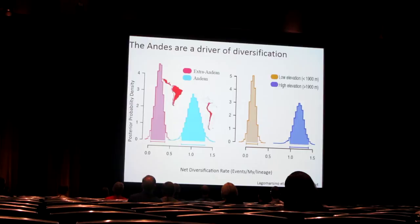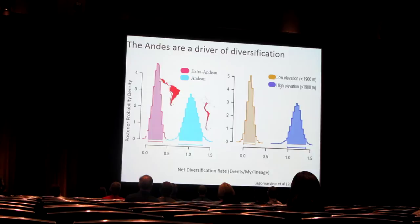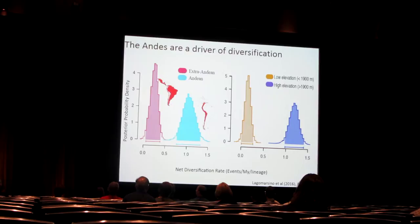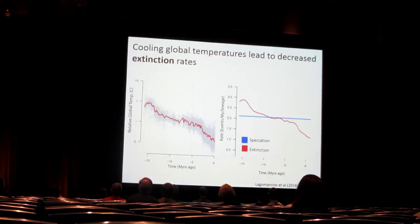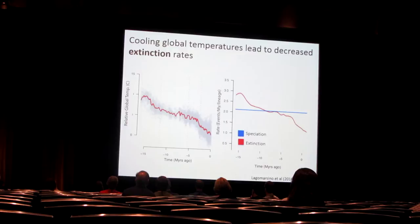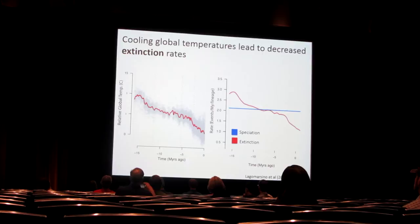We used other models as well. Using BiSSE, we see that Andean lineages in light blue have faster rates of net diversification than extra-Andean lineages, and similarly lineages at high elevation are evolving at a faster rate than those at low elevation. We also find a significant impact of temperature. Since this clade originated around the mid-Miocene climatic optimum, global temperatures have been declining, and with that, extinction rates have been declining as well, leading to an increasingly faster diversification rate in this group.